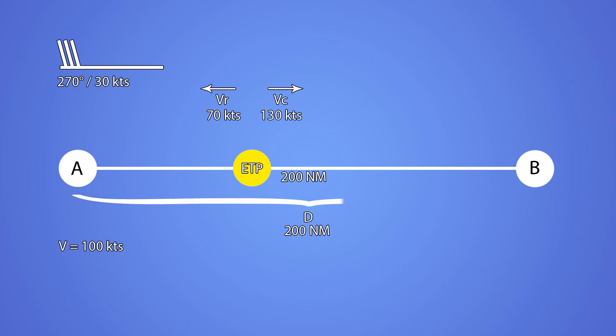We also know the total distance d. Let's call the distance to the ETP x and the rest of the distance simply as distance minus x.